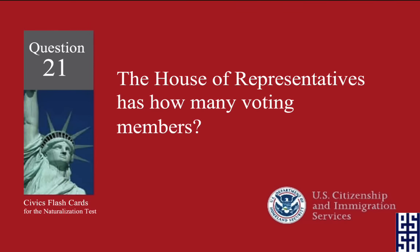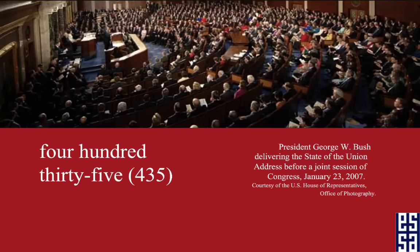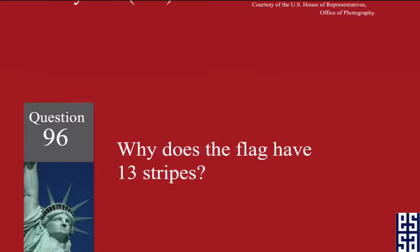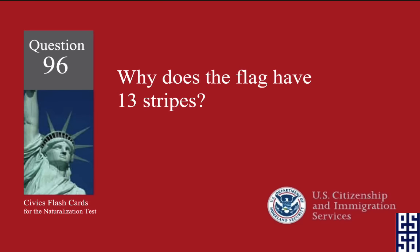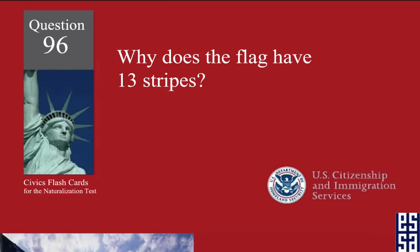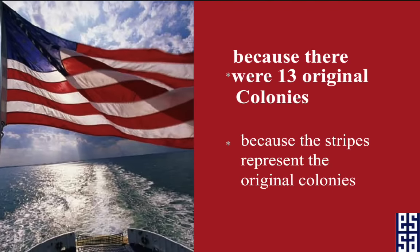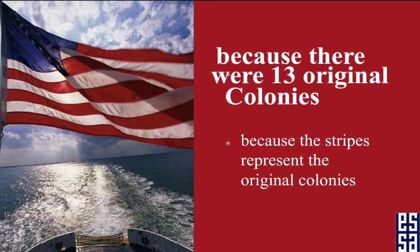The House of Representatives has how many voting members? 435. Why does the flag have 13 stripes? Because there were 13 original colonies.